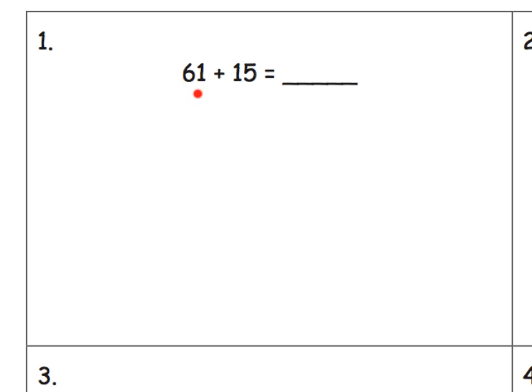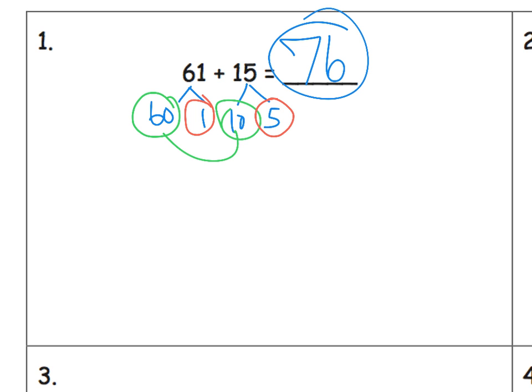For example, this problem. I see, really, this is 60 and 1. I see this is 10 and 5. I can almost do that in my head. 60 plus 10 is 70. 1 plus 5 is 6. So our answer is 76. All right. That's a good method.